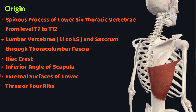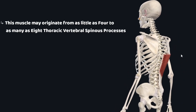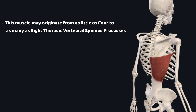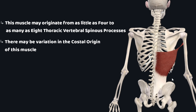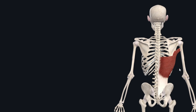As you can see, there may be anatomical variation in the origin of this muscle. It may originate from as few as four to as many as eight thoracic vertebral spinous processes. There may also be variation in the costal origin, and this muscle may or may not originate from the iliac crest.